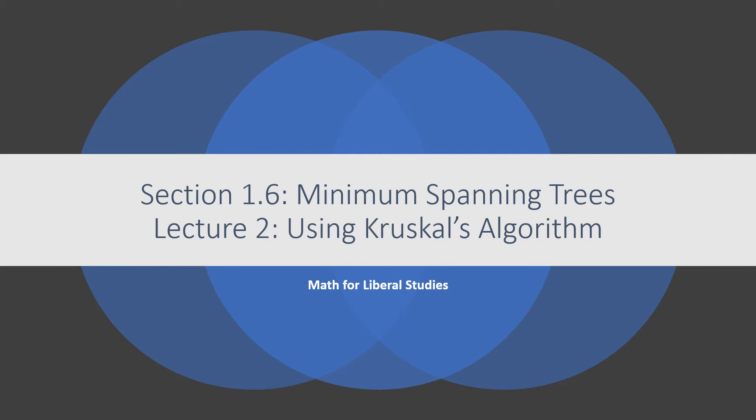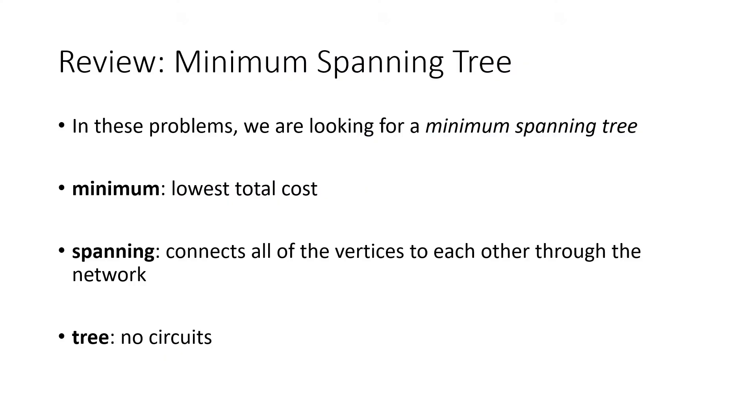This is the second lecture for section 1.6 on minimum spanning trees. In this lecture we'll see more examples using Kruskal's algorithm. Remember that we're looking for a minimum spanning tree for a graph. Minimum means we want the lowest total cost, spanning means we want all vertices to connect through the network, and tree means there are no circuits or unnecessary edges that create loops.